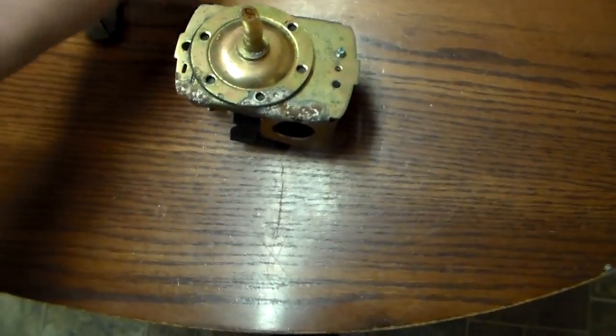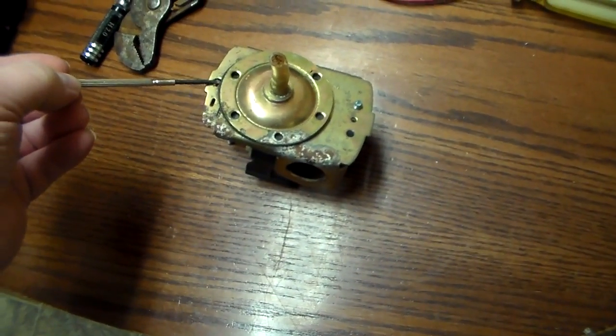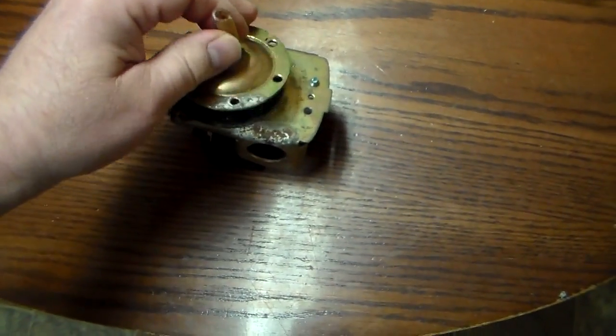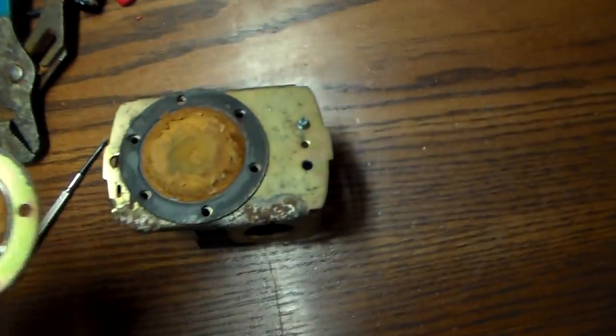You need a small straight screwdriver. Be careful not to tear the diaphragm in there when you separate it, and you'll see that there's a lot of rust accumulation.